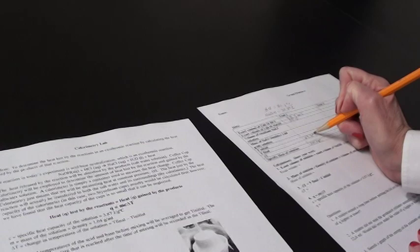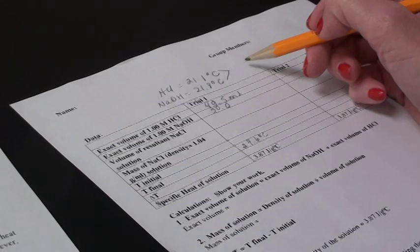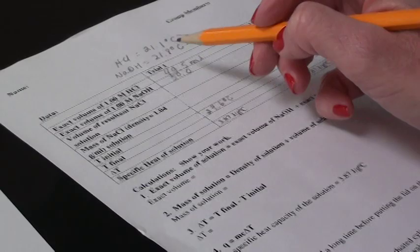I need to average these two to get my initial temperature. The average would be these two added together and divided by 2. It will go right here and then the volume would be these two added together.